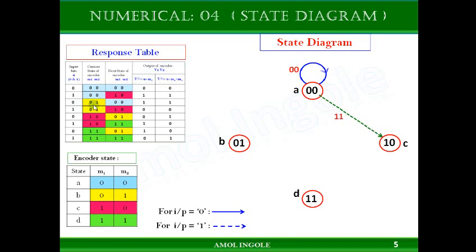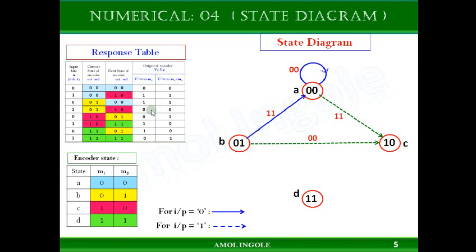Now let us look at the 01 state. When you are in the 01 state and give input 0, the next state is 00. A darker line is used because the input is 0, with output 11. When you are in the 01 state and give input 1, the next state is 10, shown with a dotted line, with output 00. Two states are now complete.